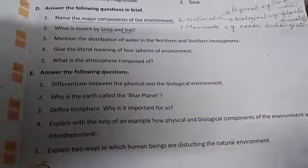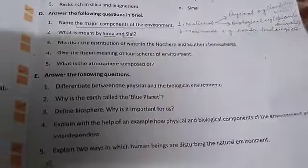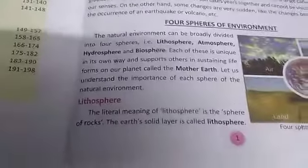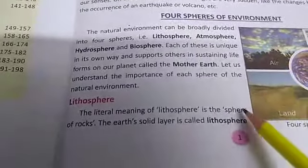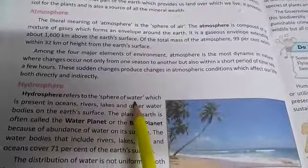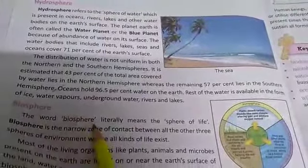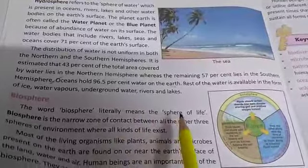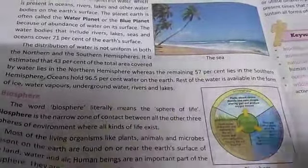The next question: give the literal meaning of the four spheres of environment. There are four spheres: number 1, lithosphere — the literal meaning is sphere of rocks. Next, atmosphere — the literal meaning is sphere of air. Next, hydrosphere — the literal meaning is sphere of water. And next, biosphere — the literal meaning is sphere of life. In this question, you have to write only the literal meaning.